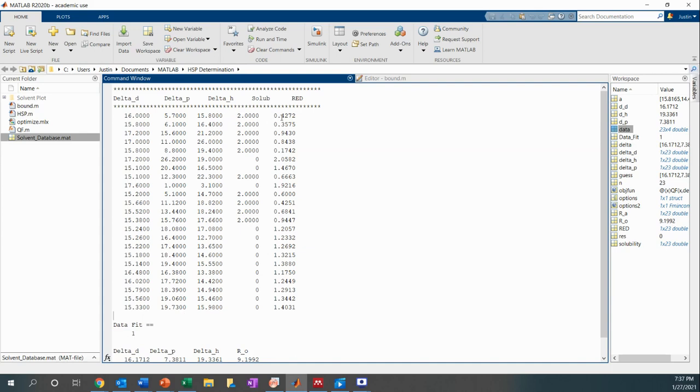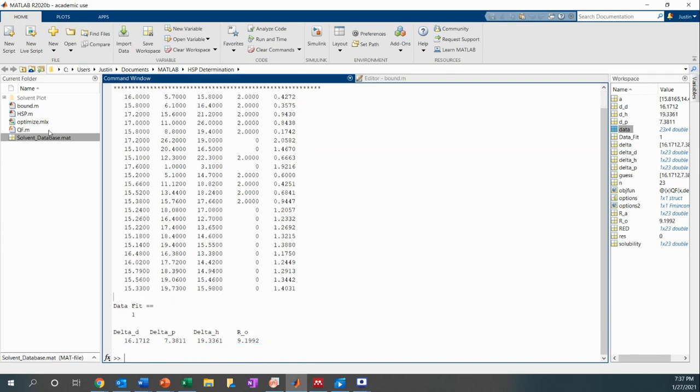So that means that solubilities of one or two, the relative energy distance is less than one, and solubilities of zero, the relative energy distance is greater than one. And so that is just how you use the MATLAB algorithm.